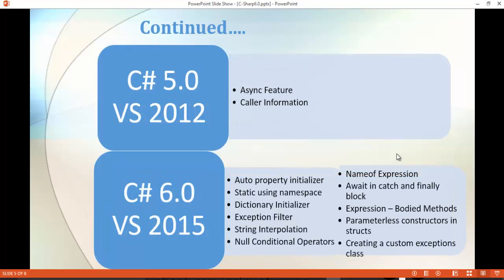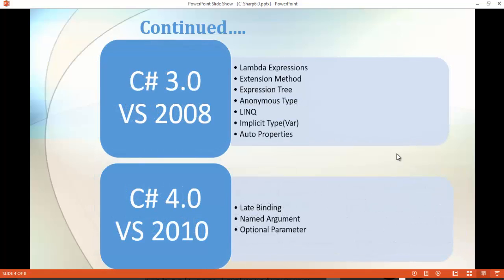Moving to C-Sharp version 4, you can observe it came up with very few features like late binding, named argument, and optional parameter. C-Sharp version 4 was released with Visual Studio 2010. Let's move to the next slide.